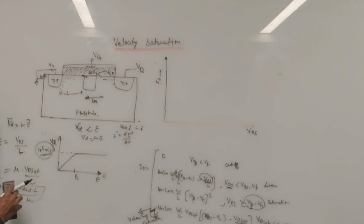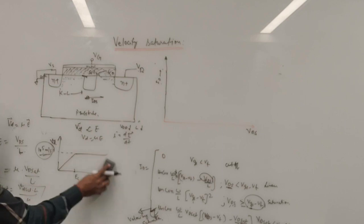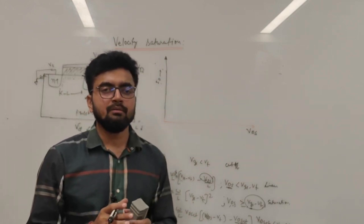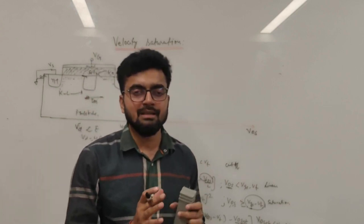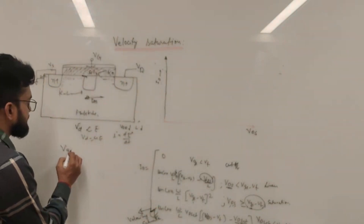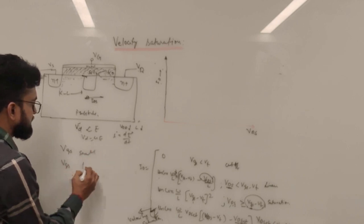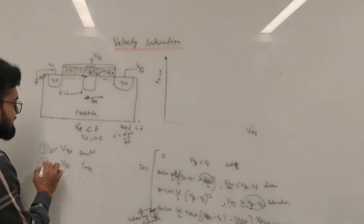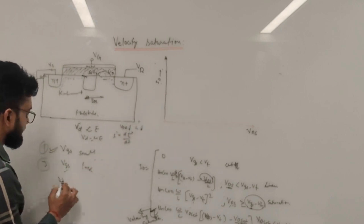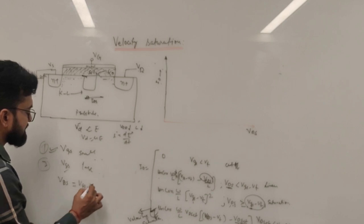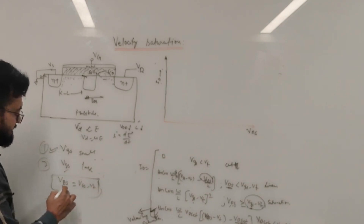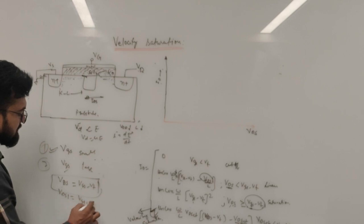To understand this better with the ID versus VDS curve, let's consider two cases: Case 1 where VDS is small and VGS is small but greater than threshold voltage, and Case 2 where VDS is large and VGS is large. Note that VDS equals VGS minus VT is the condition for saturation.